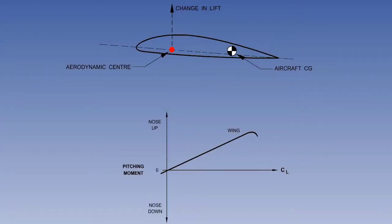The net pitching moment about the lateral axis is due to the contribution of each of the component surfaces. A fact the examiners might be interested in is that wing camber has no effect on longitudinal static stability. This is because the pitching moment about the aerodynamic centre is always nose down, regardless of angle of attack.